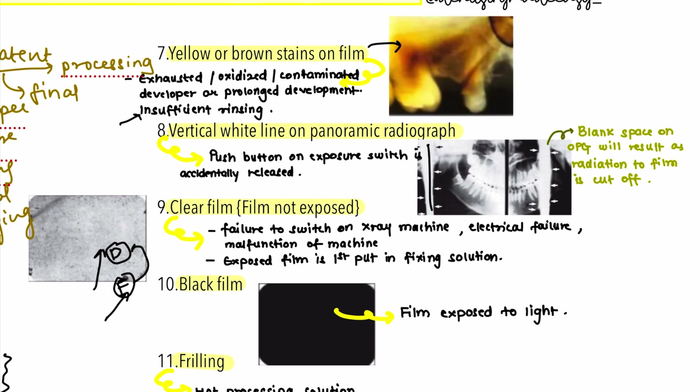To avoid confusion about tank positions, always know where the developer and fixer are located in the dark room. The next error is black film, meaning the film was exposed to natural light prior to processing. To prevent this, ensure proper safe lighting and check all doors and windows to maintain the room properly.